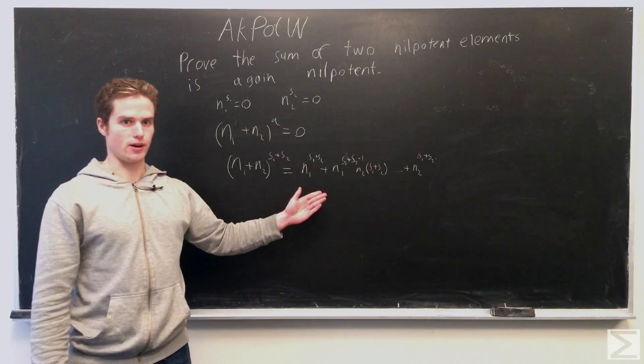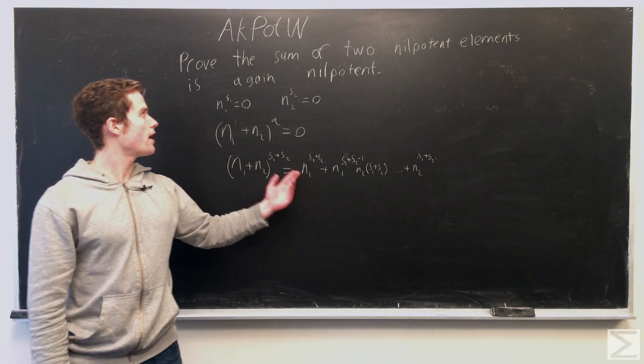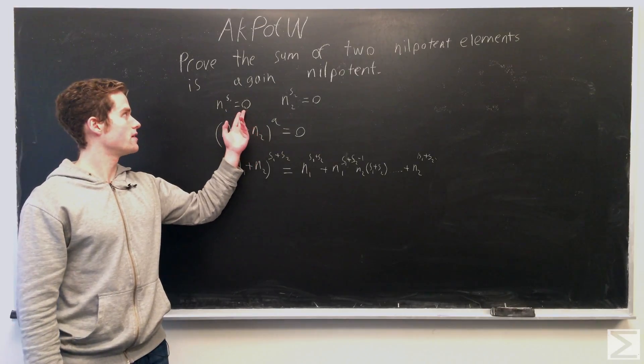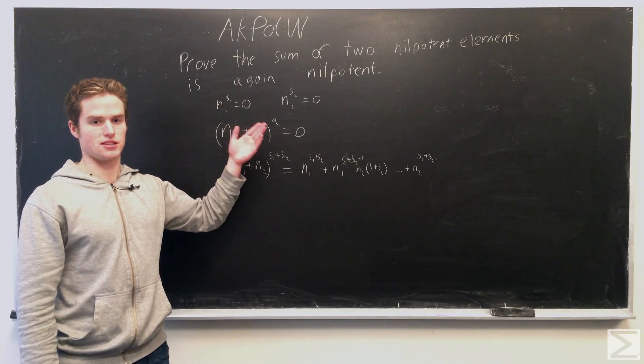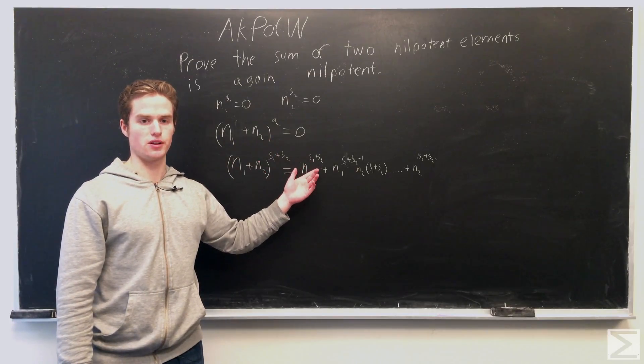And the one thing we need to know about this is that here, n1 to any power greater than s1 is going to give us zero, because anything times zero is again zero. So n1 to the s1 plus s2 is greater than s1, so this is zero.